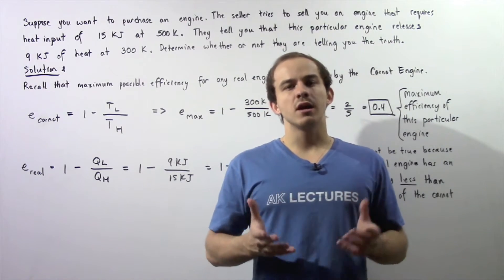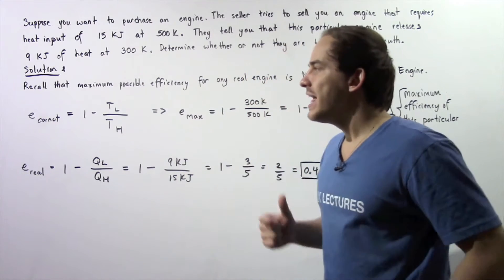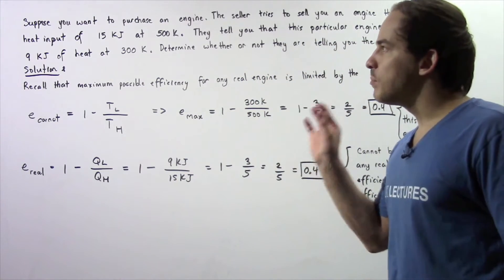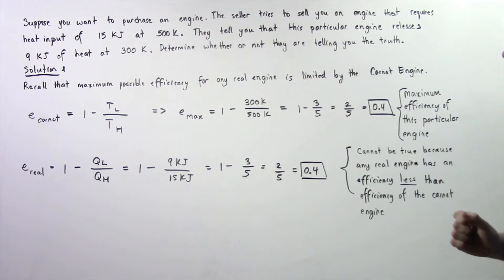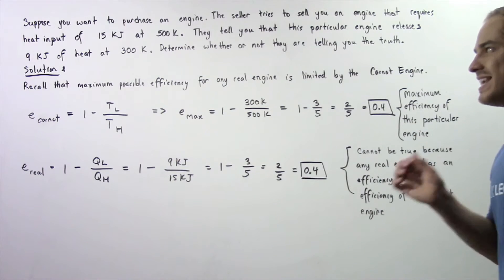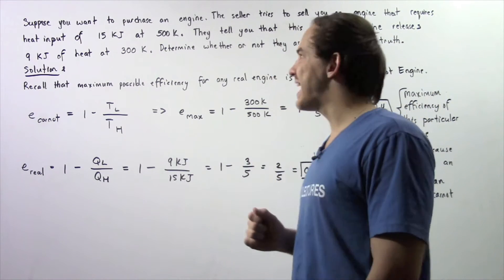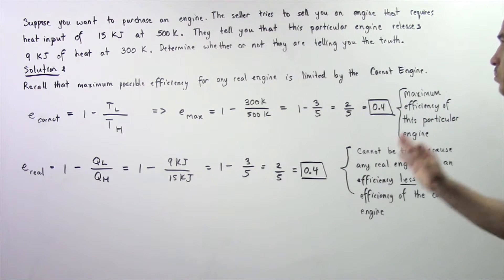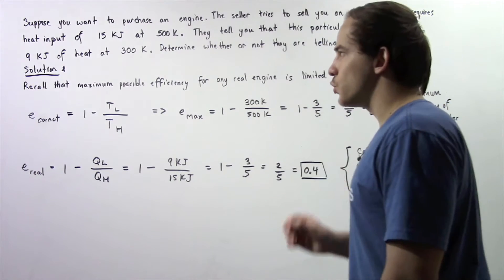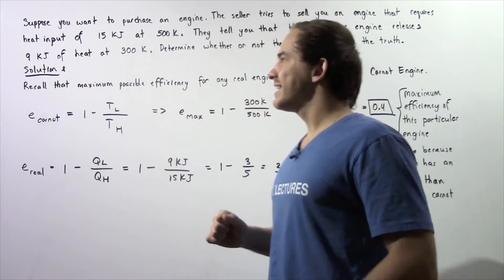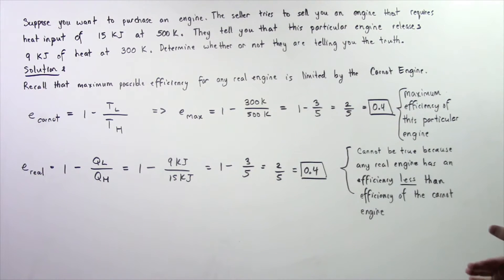In the previous two lectures, we discussed Carnot's engine and now we're actually going to do an example that involves Carnot's engine. Suppose you want to purchase an engine. The seller tries to sell you an engine that requires heat input of 15 kilojoules at 500 kelvins, and releases 9 kilojoules of heat at 300 kelvins. Determine whether or not they are telling you the truth.